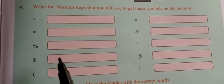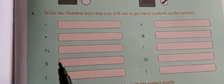Write the number keys that you will use to get these symbols on the monitor. I will show you the number keys. This symbol is exponent — it is on number 6. The next one is star — the star is on number 8. And the next one is percentile — this is on number 5, so you have to write 5.